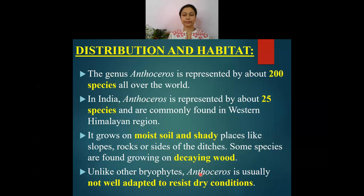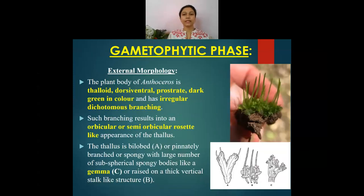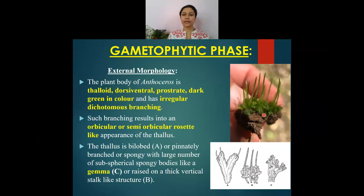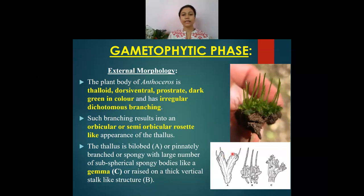However, unlike other bryophytic plants, this particular genus Anthoceros is not well conditioned or adapted to resist very dry conditions. The plant body of Anthoceros is thalloid, dorsi-ventrally flattened, and prostrate. It is dark green in color due to the presence of photosynthetic pigments along with pyrenoids.